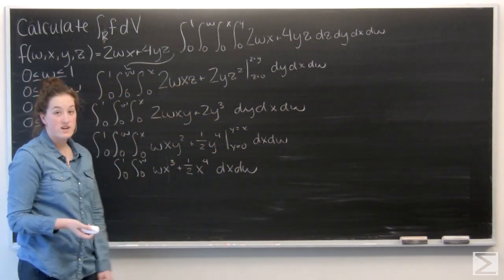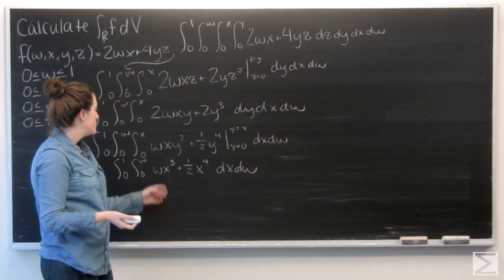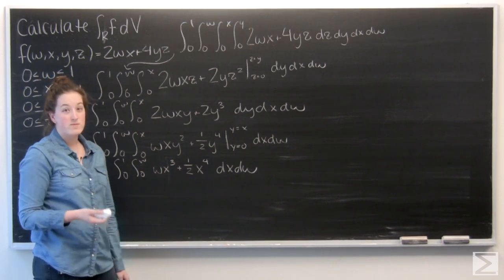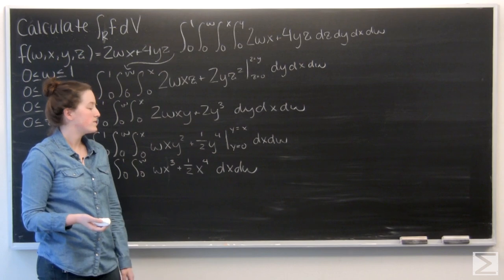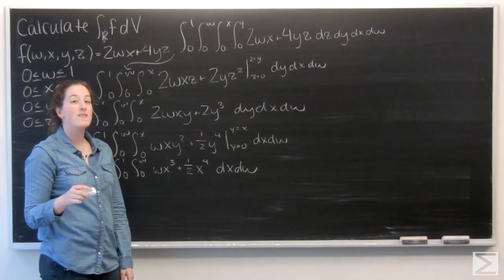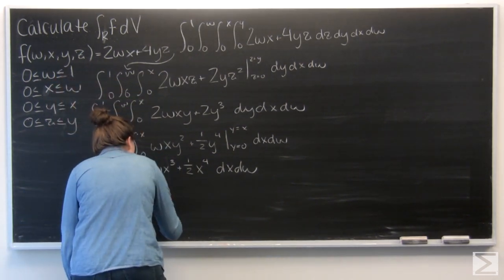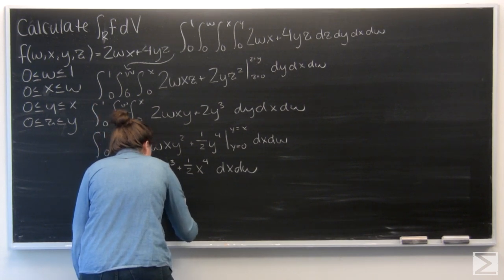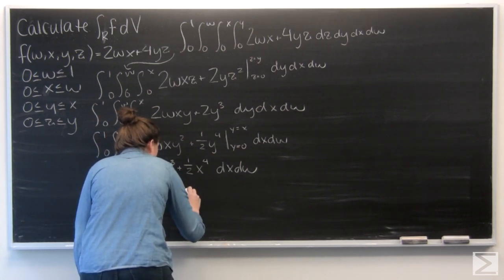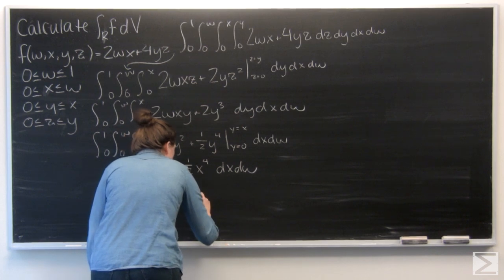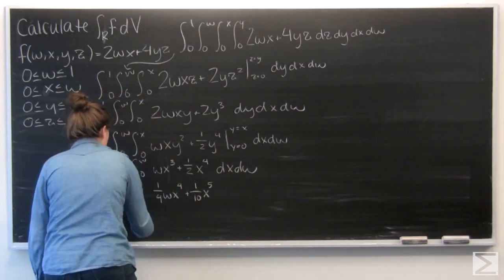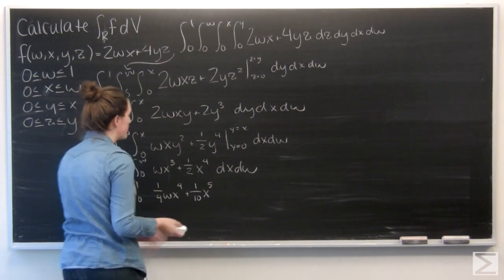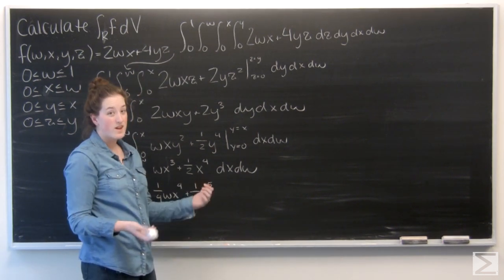So now we're going to integrate with respect to x. So wx to the third becomes 1 fourth wx to the fourth. And 1 half x to the fourth becomes 1 tenth x to the fifth. And we're going to evaluate from x equals 0 to x equals w.